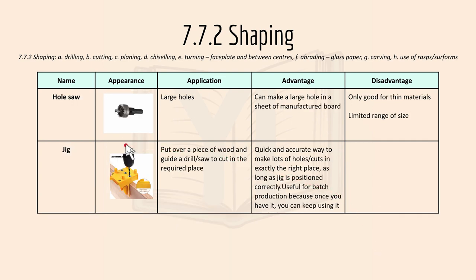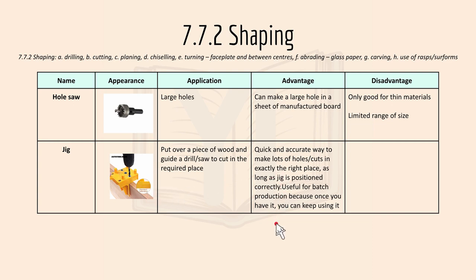Then we have the hole saw, which makes larger holes on materials. You can make a large hole in a sheet of manufactured board, but its disadvantage is that it's only good for thin materials and only comes in a limited range of sizes. For a jig, you place it over a piece of wood and use a drill or saw to cut the required place, like holes. It's quick and accurate to make a lot of holes or cuts in exactly the right place, and it's useful for batch production because once you have it, you can keep using it.